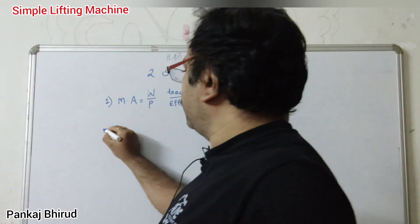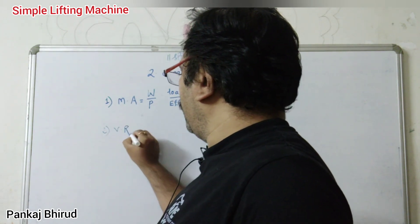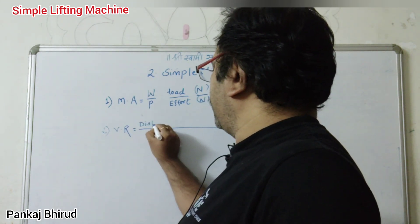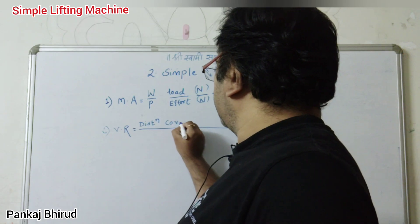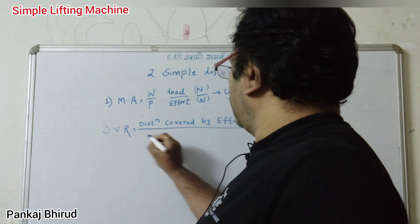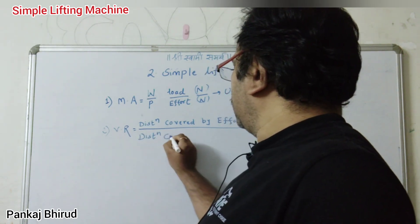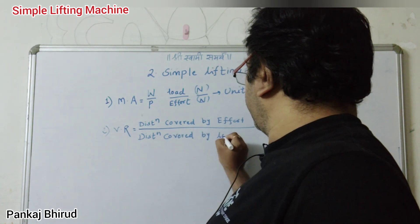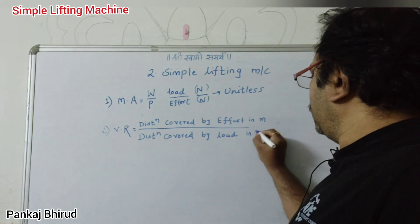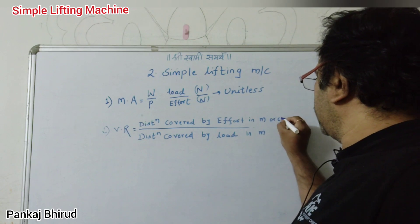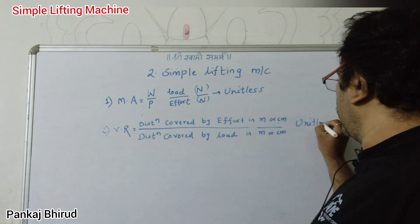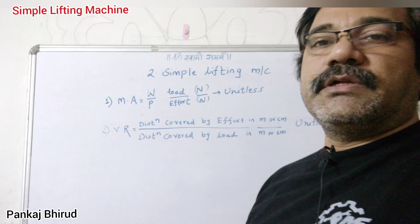The second term is the velocity ratio, VR. The velocity ratio is the ratio of distance covered by effort upon the distance covered by load. So it is also unitless, because it is the ratio of the same unit.